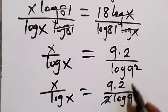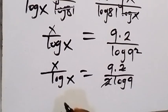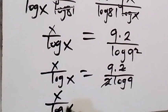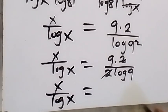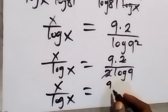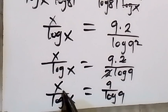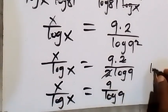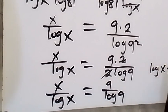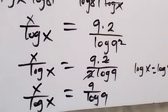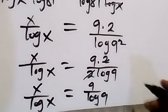From here, 2 cancels 2. What we have now is x over log x equals 9 over log 9. When we compare both sides, x is equal to 9, and also log x equals log 9, which confirms that x equals 9.